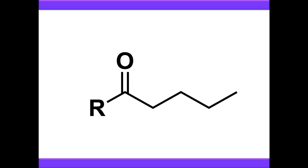When discussing carbonyl compounds, there is a common nomenclature which says that as you get further away from the carbonyl carbon, you can describe those positions with Greek letters. We have the alpha position, which is immediately adjacent, and then the beta position, gamma, delta, and so on.